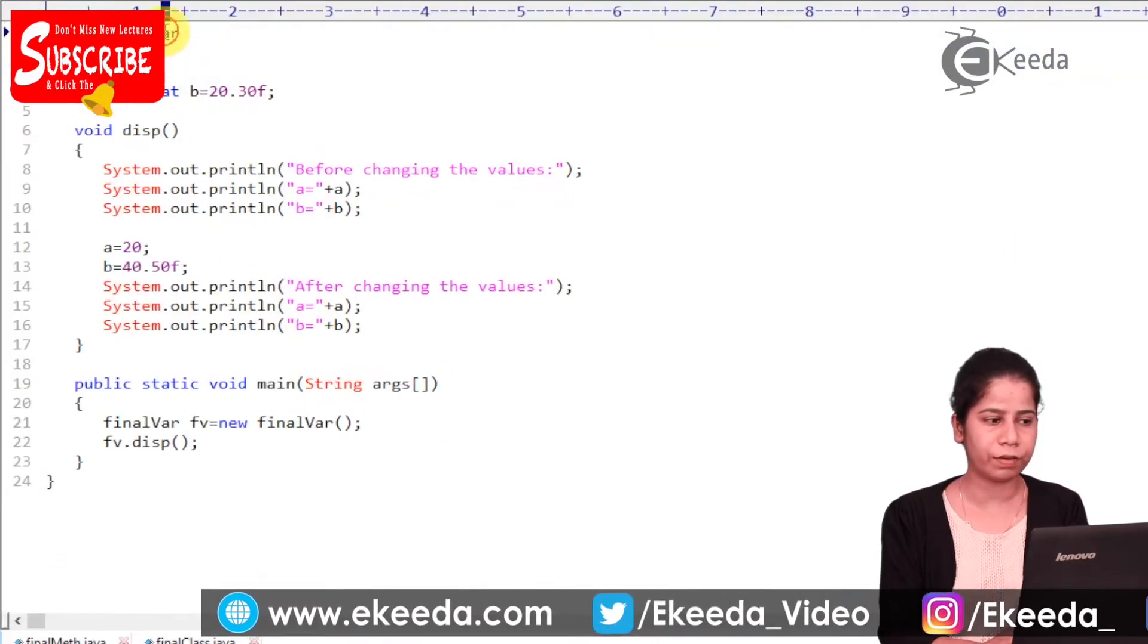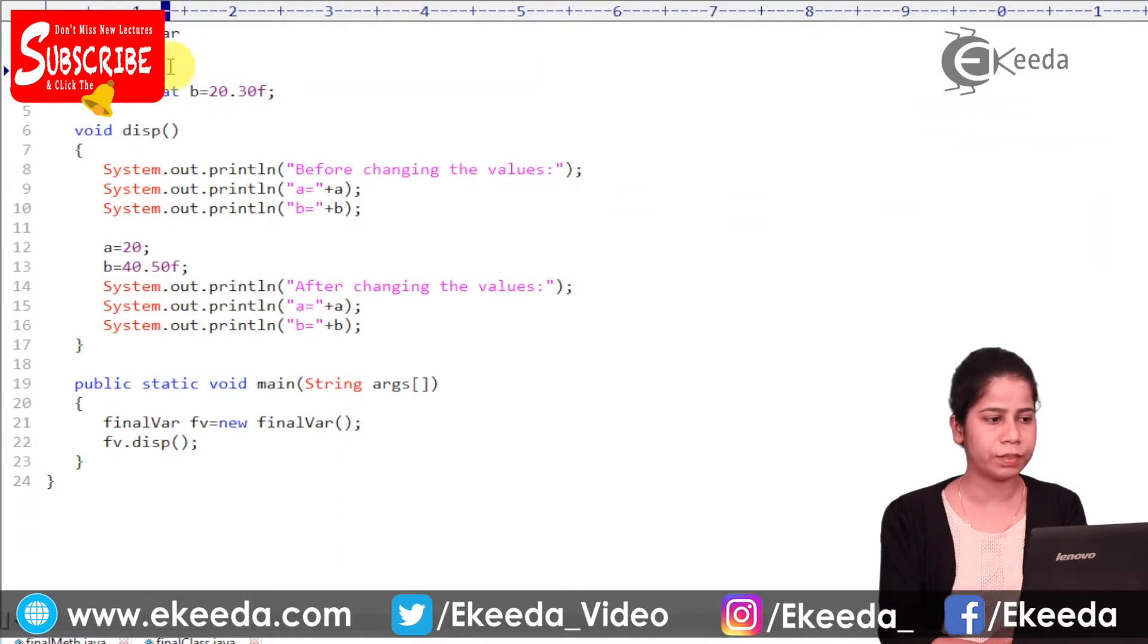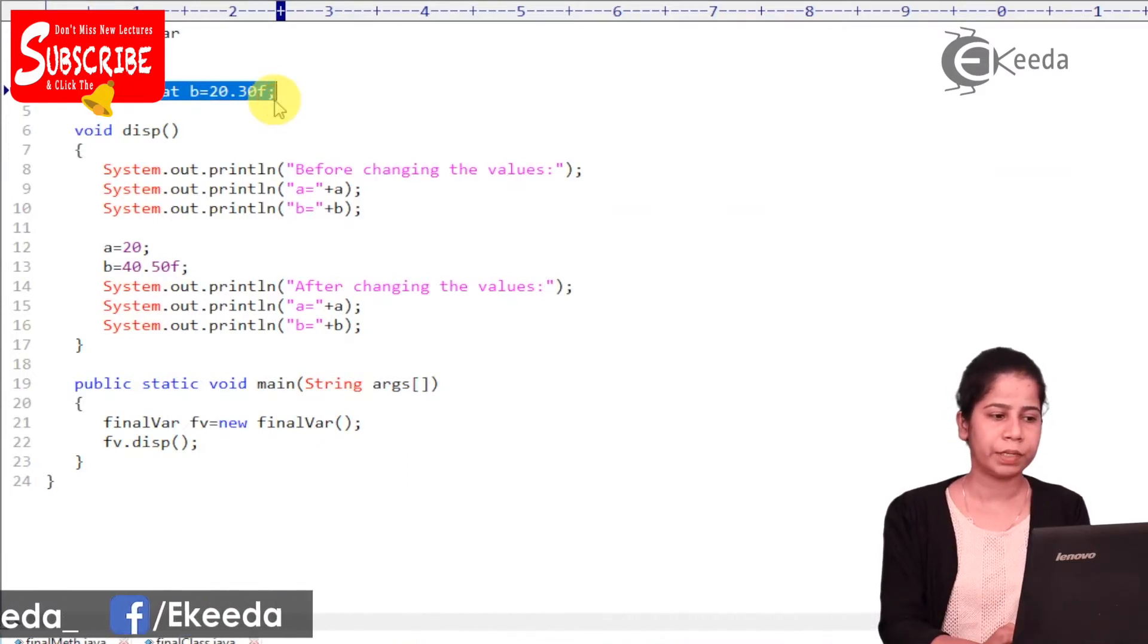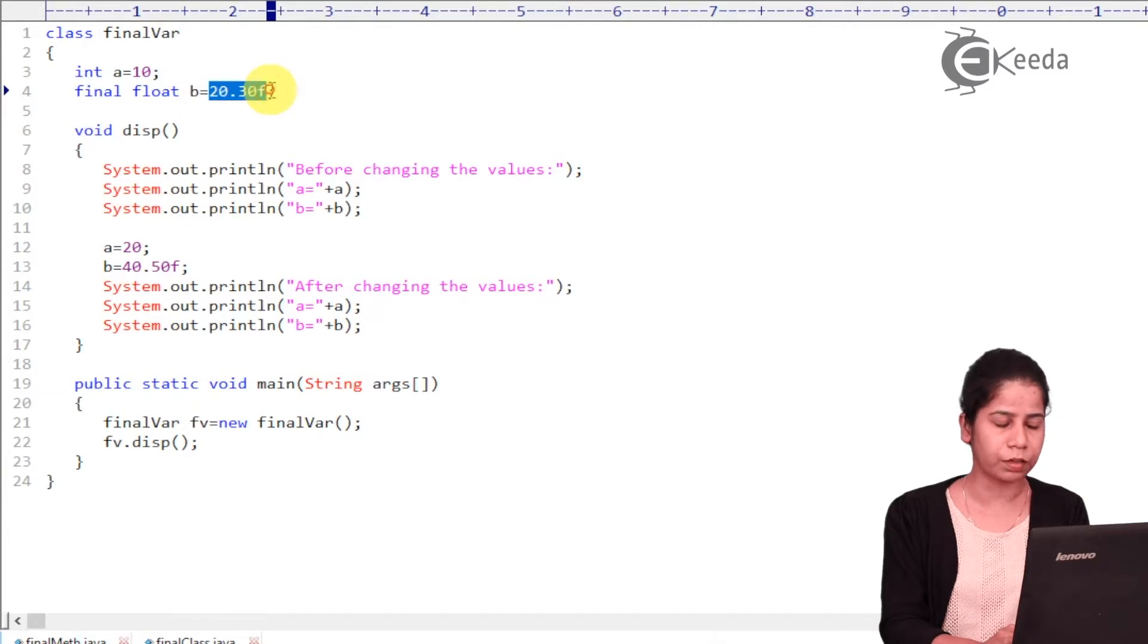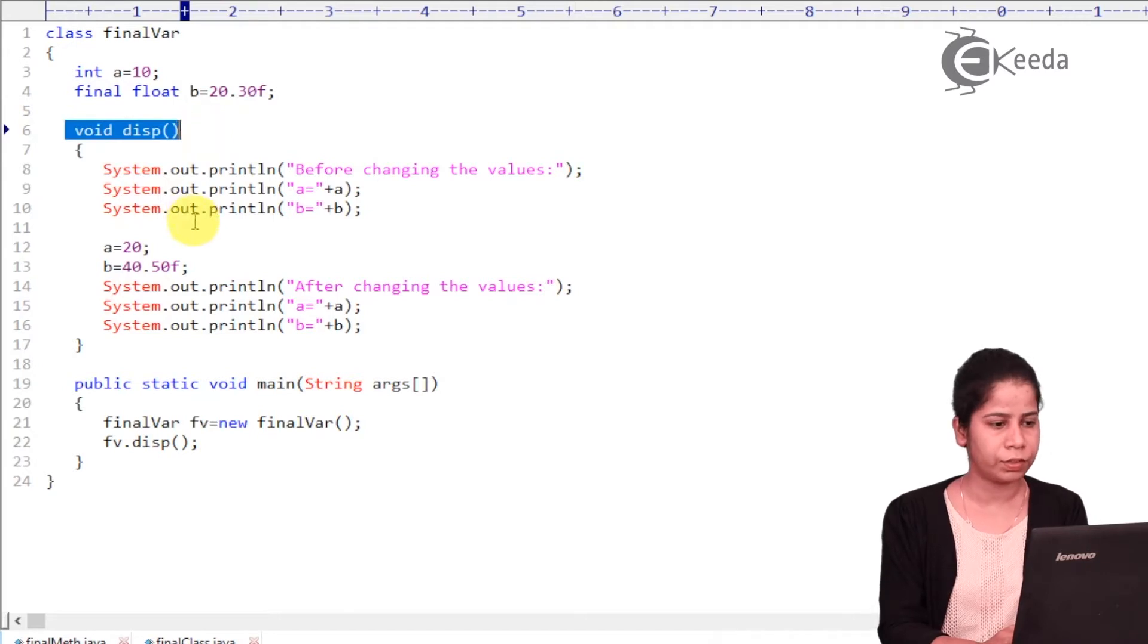So we will see programmatical demonstration on the same. So the first one is final variable. Here I'm having class called final var. Here I'm having my normal variable int a, which is initialized to 10 and I'm having final float b, which is initialized to value 20.30. Just you have to make it clear that you have to initialize the value for final variable. Then here I'm having void display method, which is a part of final var class itself. It is printing the value of a and b. And then it is trying to change the value of a and b. And after changing the value, it is printing value of a and b. Then I'm having main method and I have created object of the class final var. And then I'm calling display method over here.